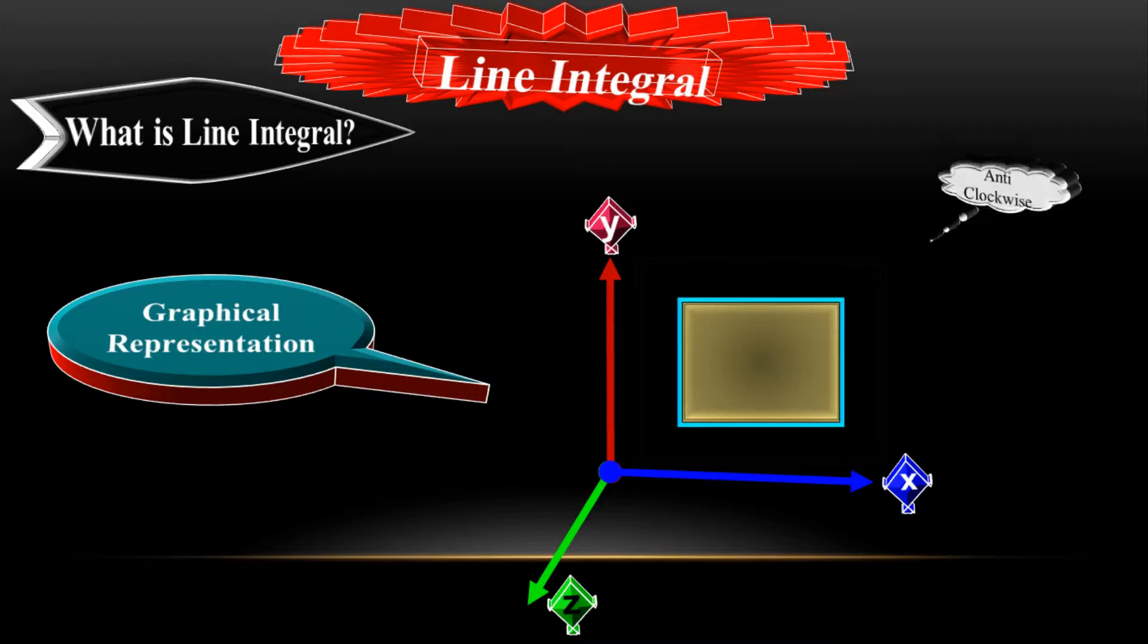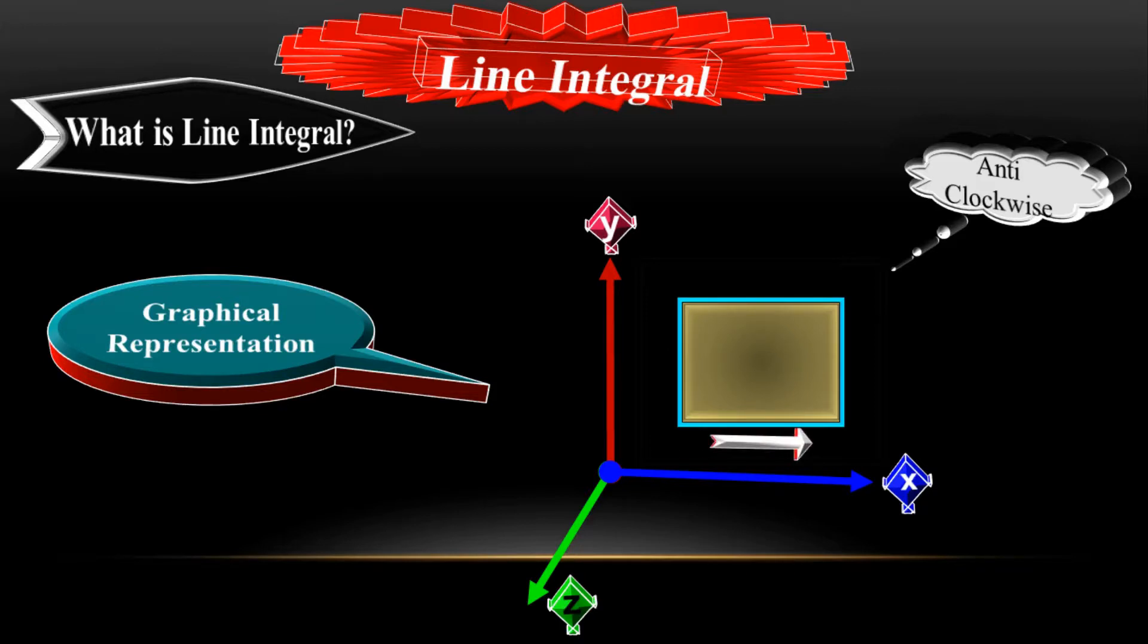Line integral takes place in anti-clockwise direction. If I start from here, side one, and then side two, and then side three, and then side four, you can see here that it goes in anti-clockwise direction. Finally, I will add all these four sides to have a total line integral value.